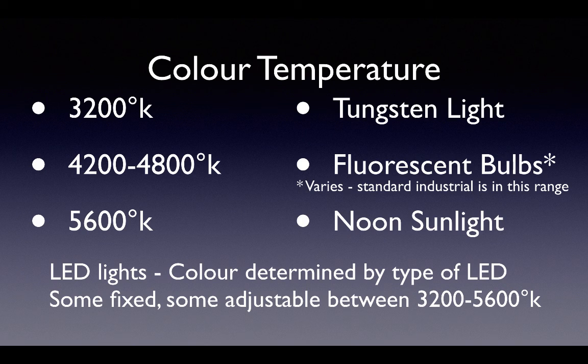As we already discussed, daylight has a very wide range of colors depending on the time of day. But even at midday, the color temperature of daylight depends on clouds, whether you're in the shade, and all sorts of things. To make things easier, film and television have standardized on a color temperature of 5600 degrees Kelvin for daylight.